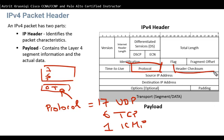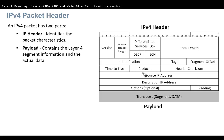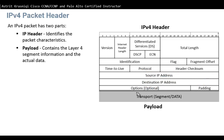Then we have the Header Checksum, which is used for error checking of the IP header. The two most important fields are Source IP Address and Destination IP Address — both are 32-bit values that identify who created the packet and where it is going. The Options field and Padding are rarely used and are beyond the scope of this module.